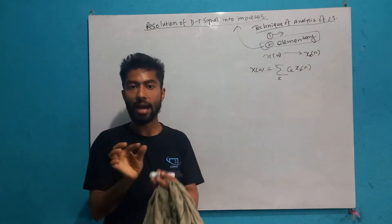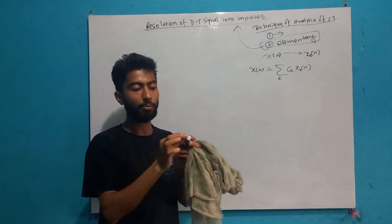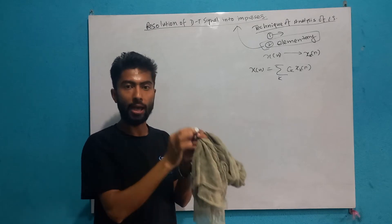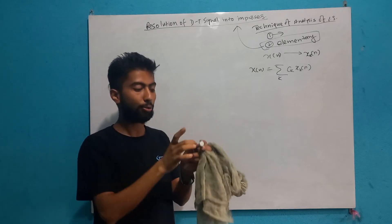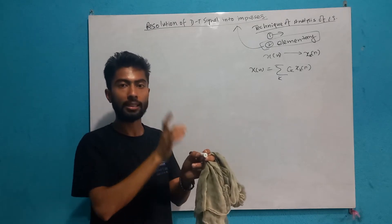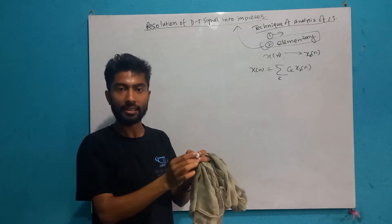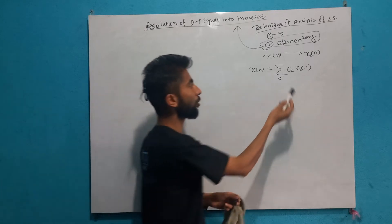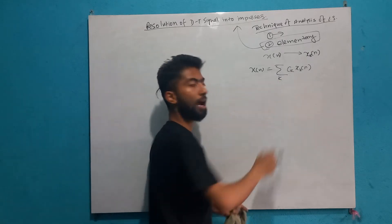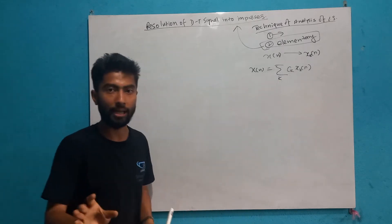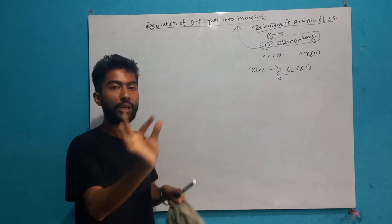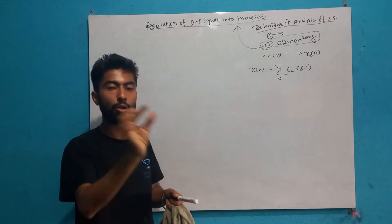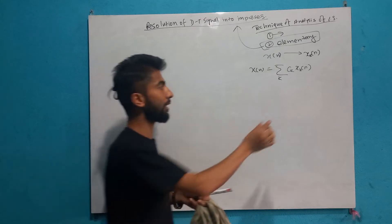We have to cut 1 unit: 1 cm, 1 cm, 2 cm, 3 cm, 1 cm. So we have to cut 1, 2, 3 units. Basic units are multiple units.